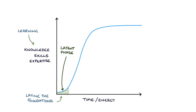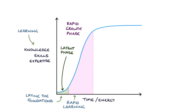Once you get through the latent phase, any more time or energy you spend results in rapid learning on that topic — the rapid accumulation of knowledge, skills, or expertise — and this is called the rapid growth phase of the learning curve.